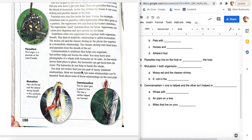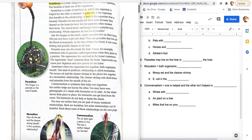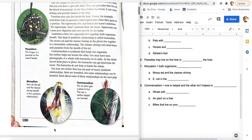You may not realize that you are part of many symbiotic relationships. Most are harmless, but some relationships can be harmful. Read about some of the relationships on the next page. So on this page, guys, you had parasitism. You had mutualism. And now here you have an example of commensalism.